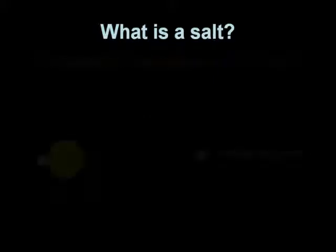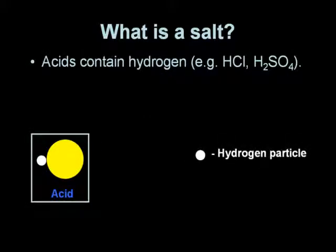So what actually is a salt? Well, we always start with an acid, and acids contain hydrogen. Examples including hydrochloric acid and sulfuric acid. We can represent an acid in the diagram shown on the screen. So you can see the small white particle is a hydrogen particle, and the yellow particle is the rest of the acid.